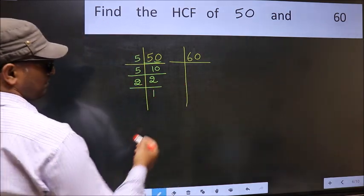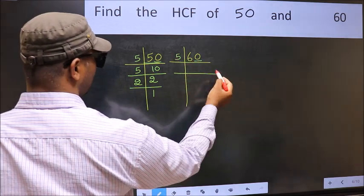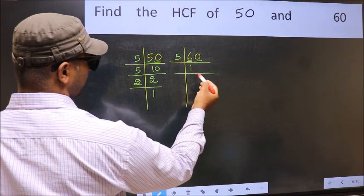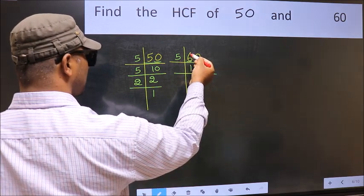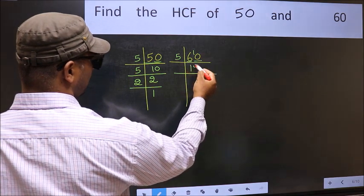Now the other number. Last digit is 0, so take 5. First number is 6. A number close to 6 in the 5 table is 5×1 is 5. 6-5 is 1, 1 carried forward is 10. When do we get 10 in the 5 table? 5×2 is 10.